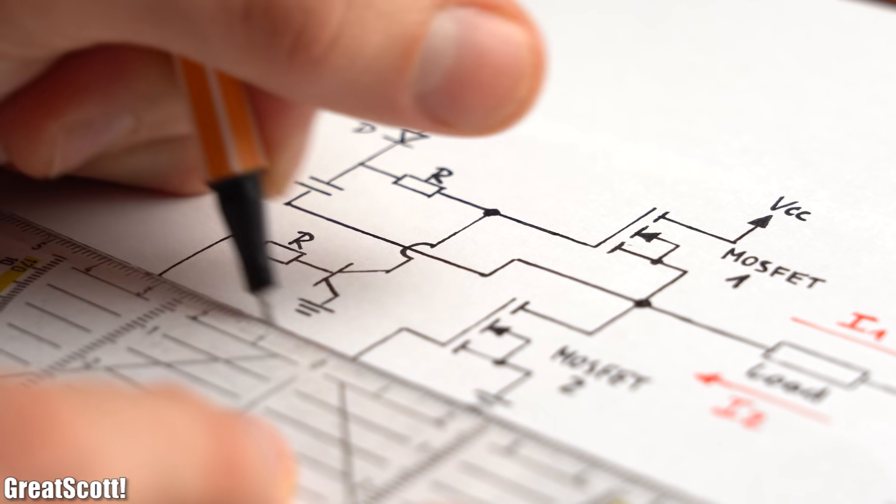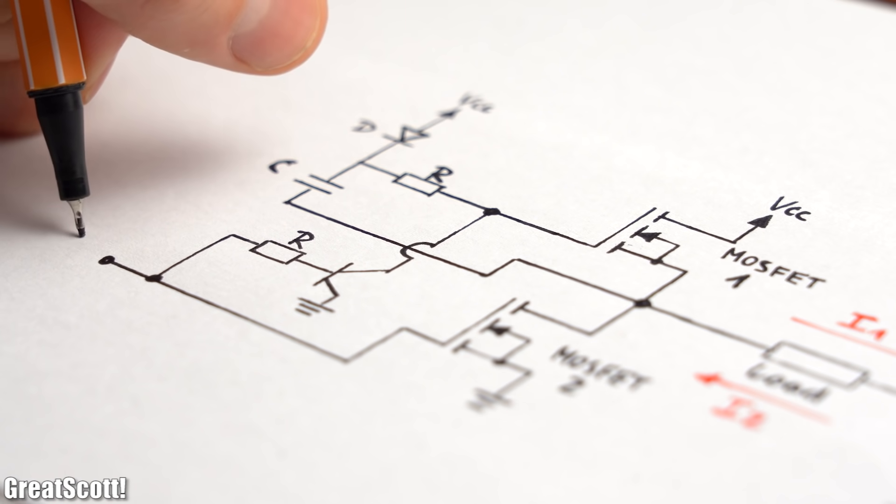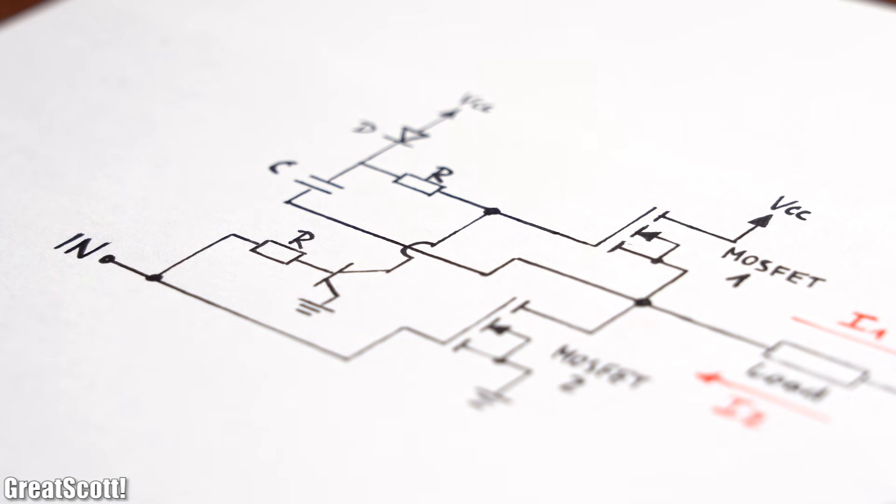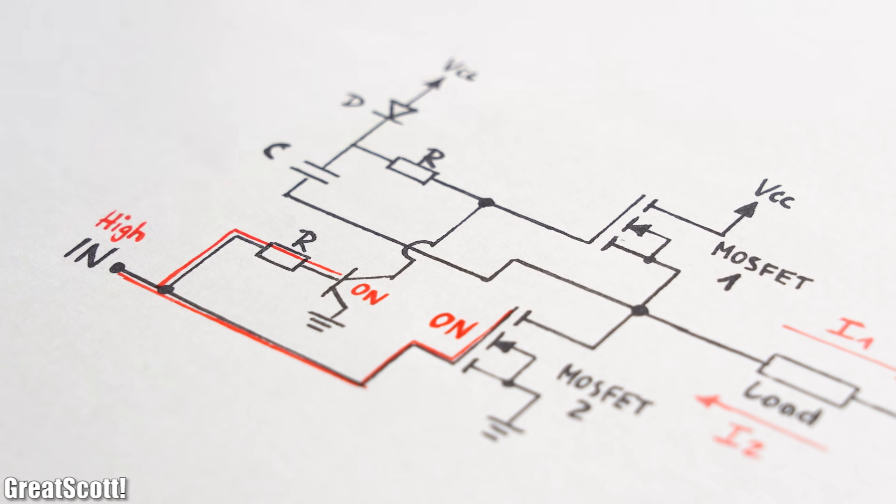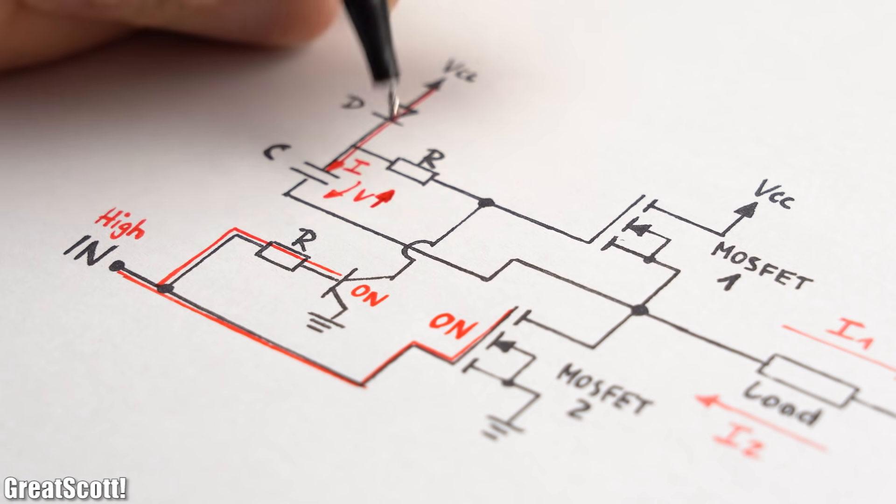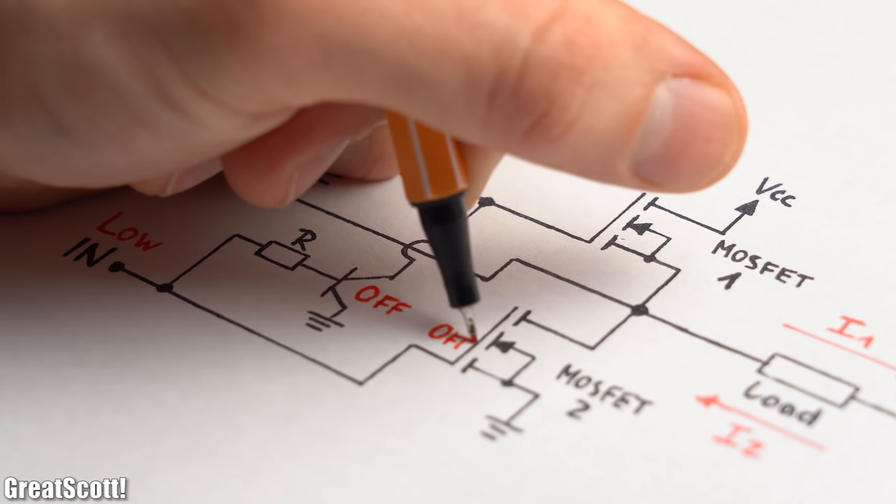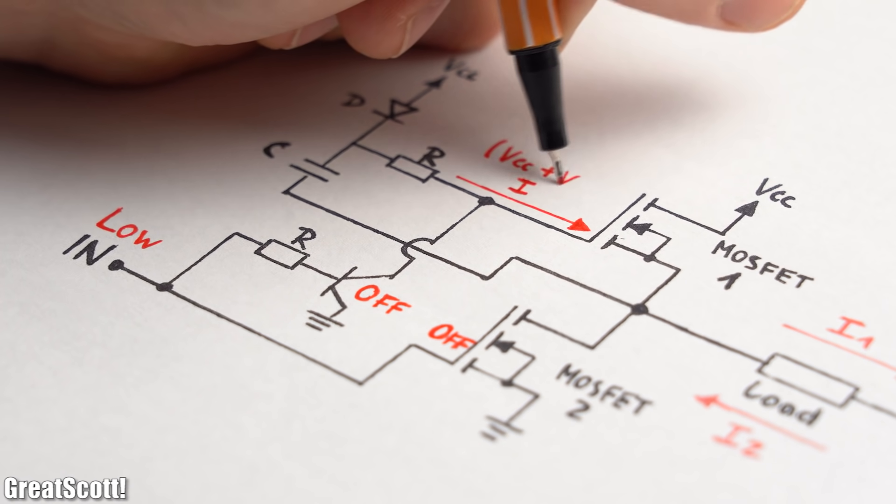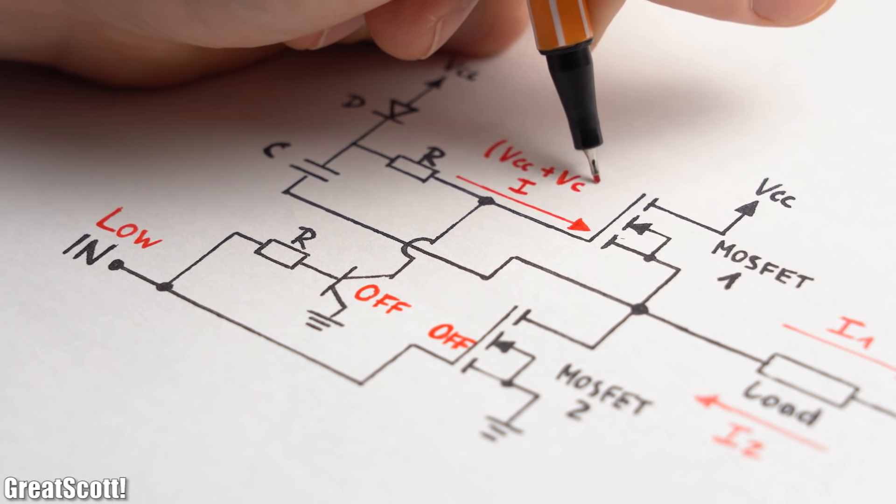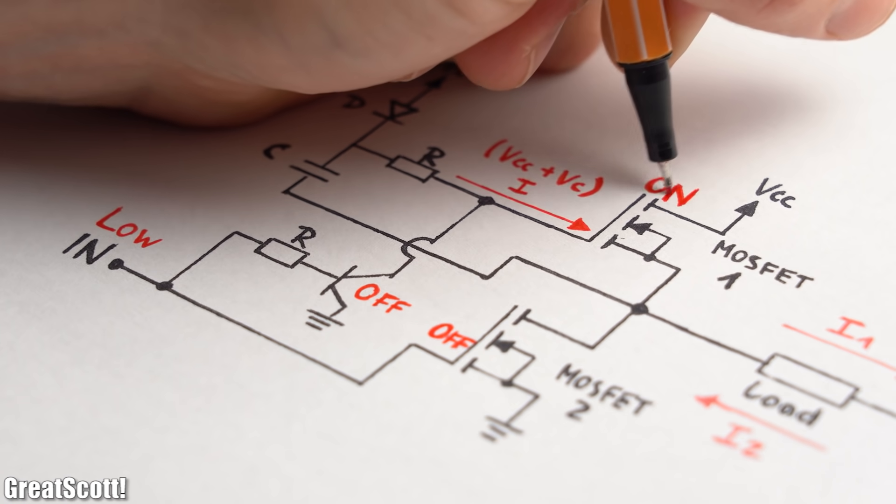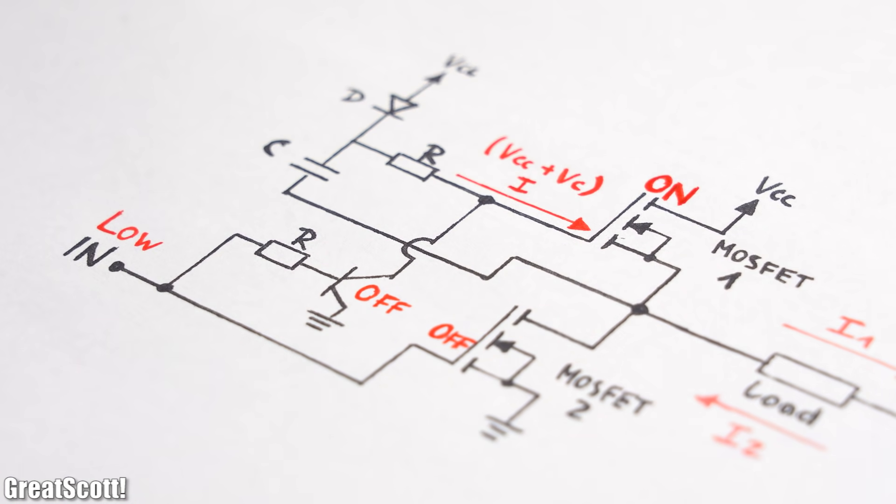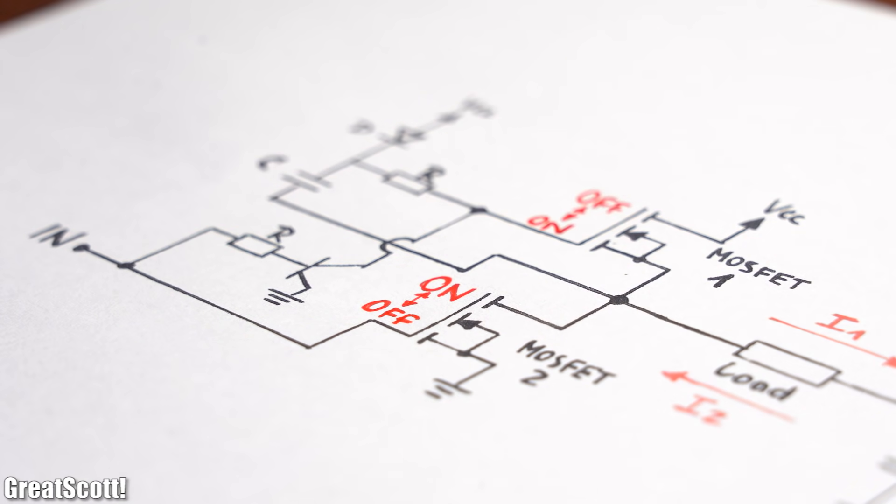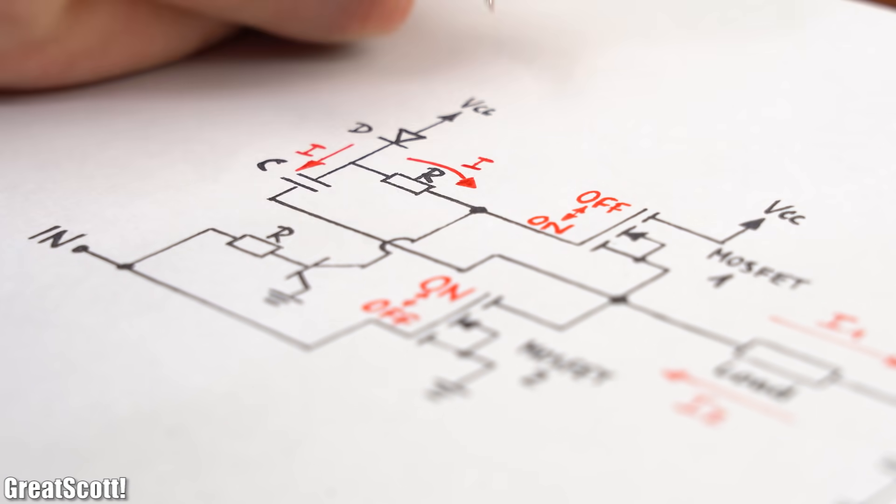To solve this problem we can build up such a bootstrapping circuit whose goal it is to create a higher voltage for the upper MOSFET. If the input is high the lower MOSFET turns on while the capacitor gets charged up through the diode. When the input becomes low the lower MOSFET becomes non-conductive while the gate of the upper MOSFET gets charged up through the supply voltage plus the capacitor voltage and thus it can turn on without any problems. This only works however if the MOSFETs get turned on alternatingly because the capacitor needs to get charged up constantly.